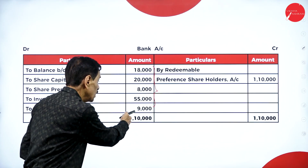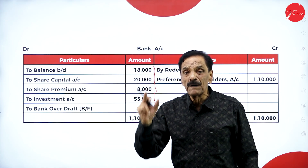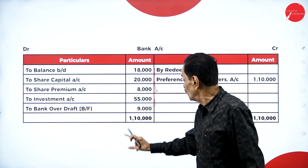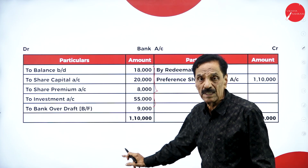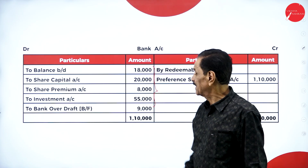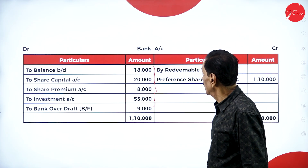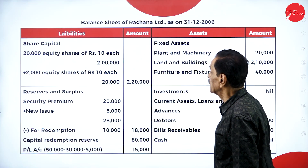There was a shortage of nine thousand. For that shortage, we have taken the bank overdraft to the extent of nine thousand. So the bank overdraft will come on the liability side of the balance sheet.